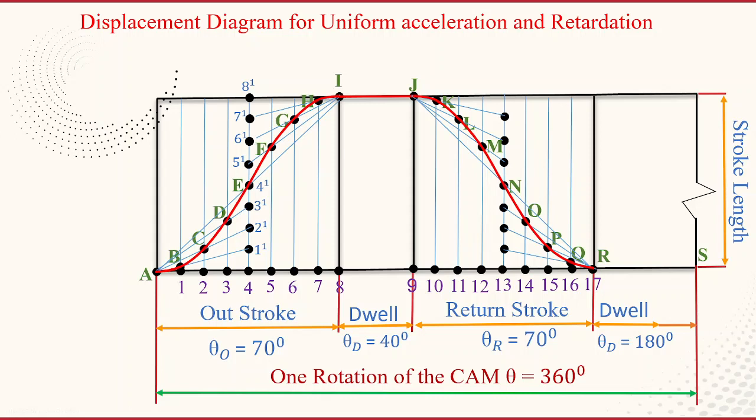From point R to S is the final dwell period, represented as a straight line. The complete sequence of points A, B, C, D, E, F, G, H, I, J, K, L, M, N, O, P, Q, R, S represents the required displacement diagram for one complete rotation of the cam.